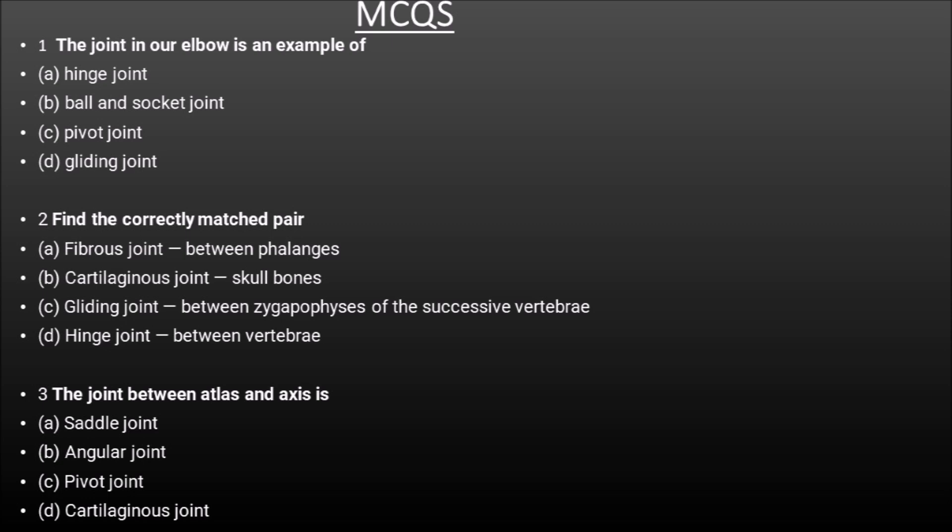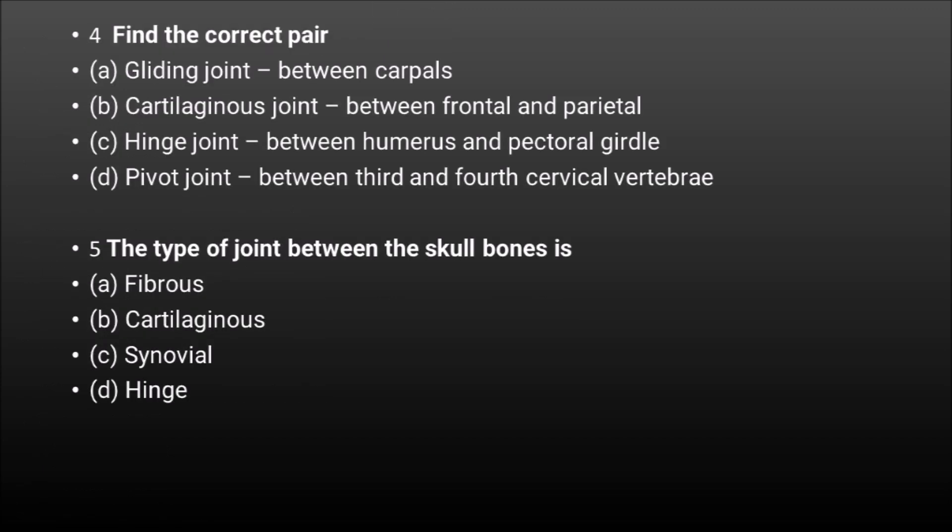Third MCQ: the joint between the atlas and the axis — options: saddle, angular, pivot, cartilaginous. Correct answer: option C, pivot joint. Fourth MCQ: find the correct pair — gliding joint between the carpals, cartilaginous joint between frontal and parietal, hinge joint between humerus and pectoral girdle, pivot joint between third and fourth cervical vertebrae. Correct answer: option A, gliding joint between the carpals. Fifth MCQ: the type of joint between the skull bones — fibrous, cartilaginous, synovial, hinge. Correct answer: option A, fibrous joint. Cartilaginous joint is seen in pubic symphysis and manubriosternal joint; hinge joint in elbow and ankle.